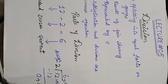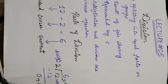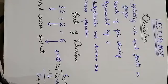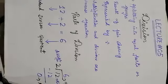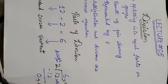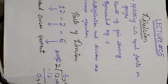Division is splitting into equal parts or groups — the result of fair sharing — represented by the division sign. Multiplication and division are inverse operations. Division is the action of separating something into parts. In the previous class we learned division of a two-digit number by a one-digit number with zero remainder.